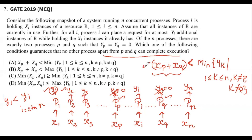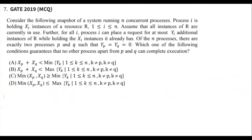Option A matches this condition. Option B uses maximum instead of minimum — but if XP plus XQ is greater than the minimum, at least one process will get executed, which violates the requirement. Options C and D involve minimum of XP plus XQ, which doesn't make sense in this context. So option A is the correct answer.